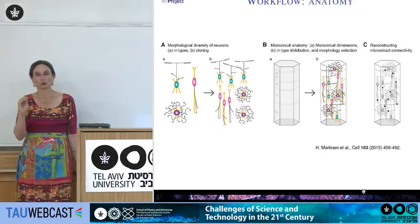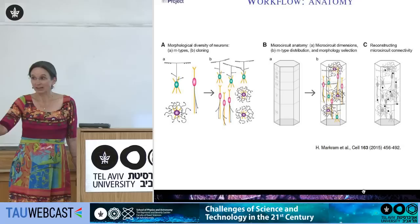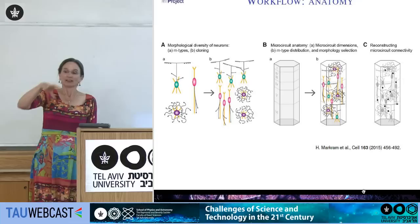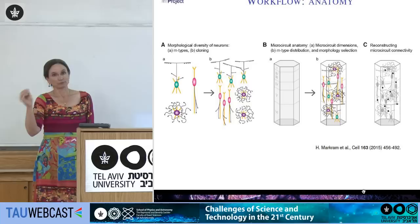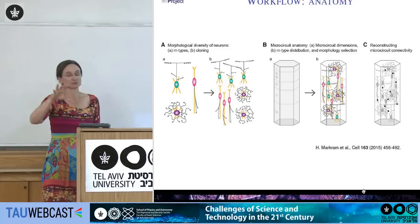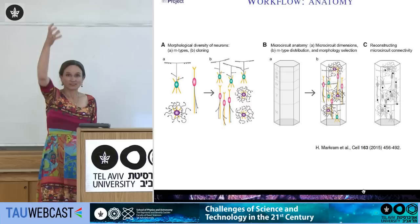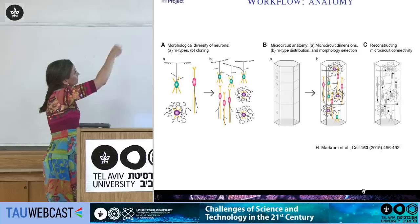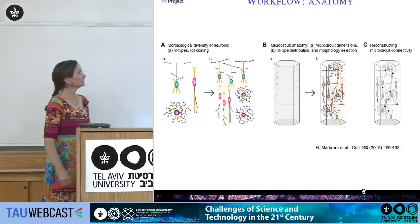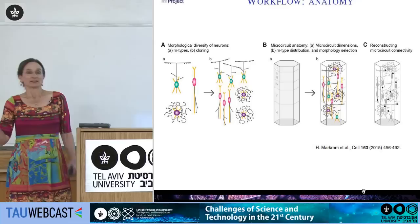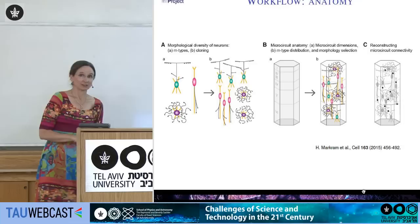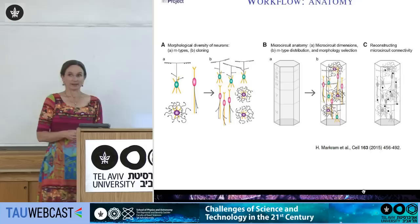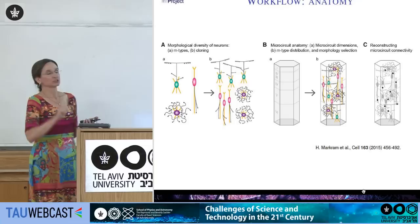The workflow for reconstructing the whole microcircuit starts with 55 different morphological types. Since only a small number of actually reconstructed neurons are available, there's a cloning process that perturbs neuron shapes slightly to introduce morphological diversity. These are placed within the microcircuit according to a specific algorithm, and then connectivity is reconstructed — starting from the rule that an axon and dendrite must approach within three microns for there to be any chance of a synapse. A four-step pruning process then removes superfluous connections down to a biologically reasonable percentage.